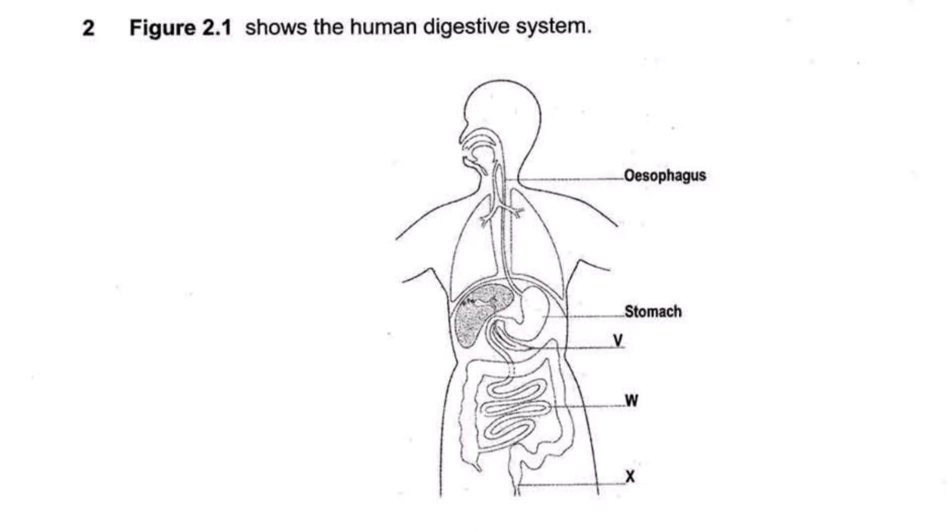Okay guys, so now let's look at the human digestive system, look at a question on the human digestive system. This is the question, the diagram and the questions. Let's now answer the questions. When you look at the diagram, let's study it first before we start answering. We have the oesophagus, the stomach there, and we also have structure V, W, and X.